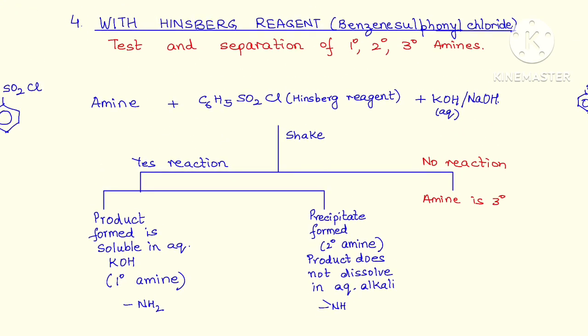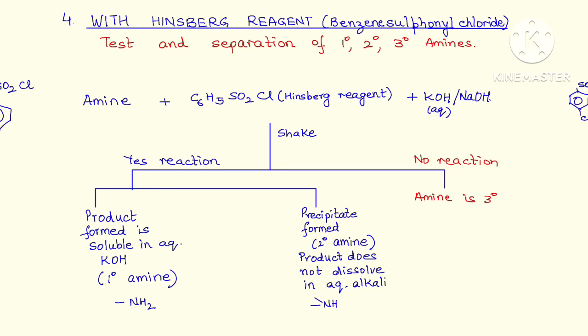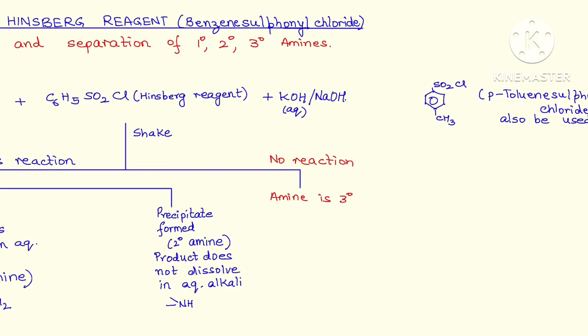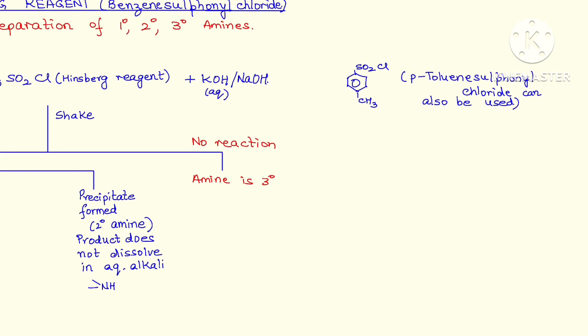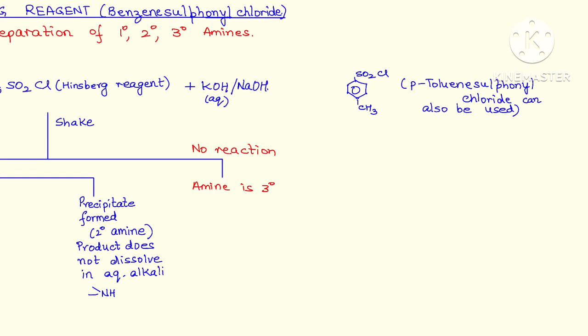This helps us to identify primary, secondary and tertiary amines. Let us now understand the logic behind it as to why this happens. Interestingly, along with benzene sulfonyl chloride, or instead of it, we can also use paratoluene sulfonyl chloride.